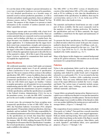Many riggers operate quite successfully with a basic level of material knowledge in their proverbial toolkit. There are certain materials that are commonly used on most parachute systems, and in dealing with these on a regular basis, the rigger becomes very familiar with their characteristics and proper application. It is fundamental that the rigger know their correct type, nomenclature, strength, and common use. In dealing with other riggers, manufacturers, and suppliers, the rigger is then able to identify the referenced material in order to obtain the appropriate repair part or describe the use of the material to others. All of this is part of the parachute rigger's lexicon, required to communicate their needs and accomplish the required tasks.